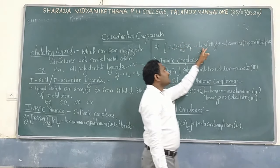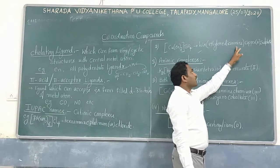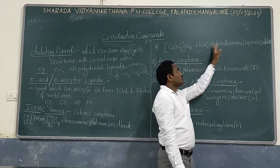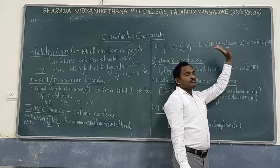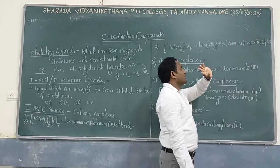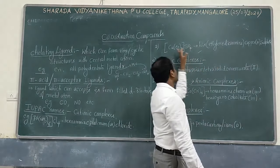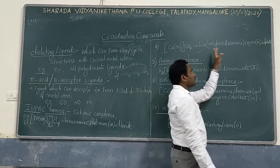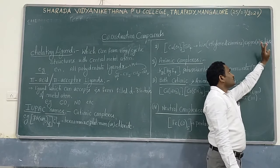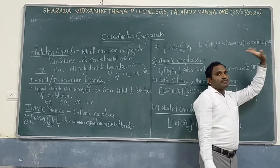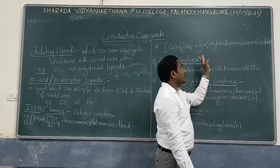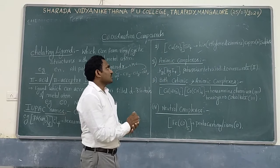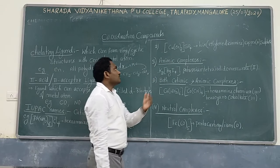This name — ethylenediamine — if it is bis, we need to use bis(ethylenediamine). Next, the central metal atom is copper, with oxidation number 2, and sulfate. You have to write continuously — don't give any space. Those are the rules.